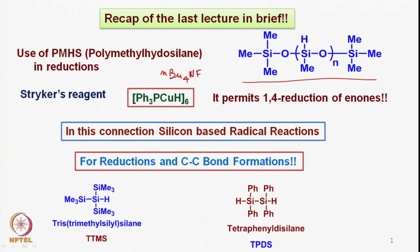We also looked at the reactivity of Stryker's reagent, which permits 1,4-reduction of enones — a very important reaction. In this connection, we also saw the effect of silicon-based reducing agents, both triethylsilane and polymethylhydrosilane.